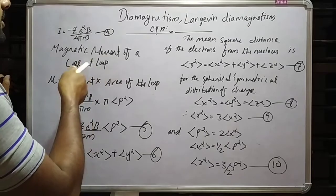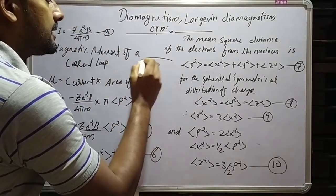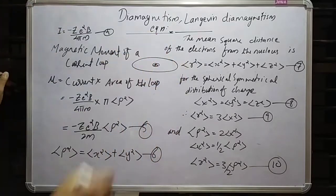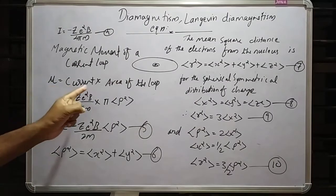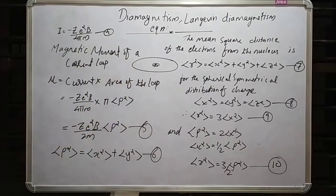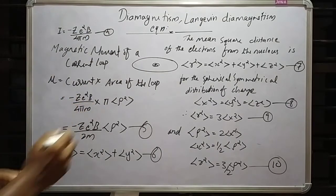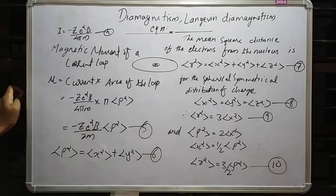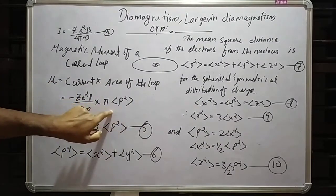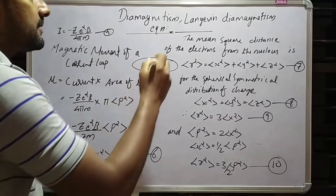The magnetic moment of a current loop is defined as mu equal to current times the area of the loop. We are considering a current loop around the central nucleus, and this current loop produces the magnetic field. The current is minus Ze squared B over 4pi m, and the area of the loop is pi times the mean rho squared, where rho squared is the mean square of the perpendicular distance of electrons from the field axis.